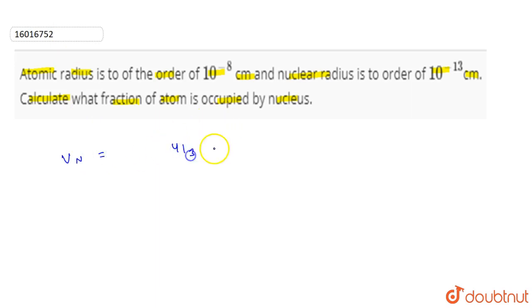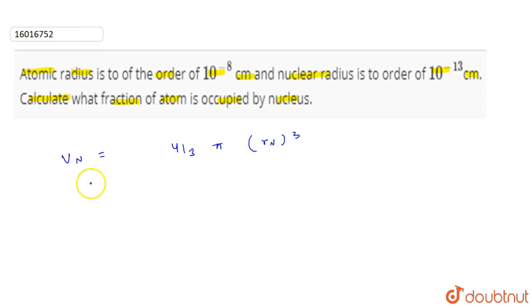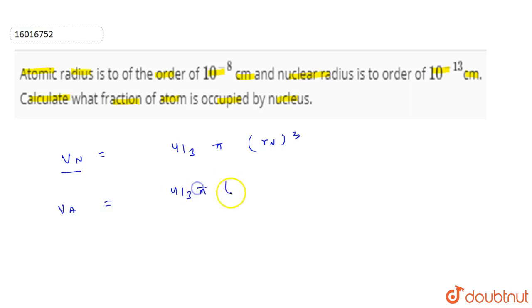The volume of the nucleus will be 4/3 π times the radius of the nucleus cubed. The fraction will be that volume divided by 4/3 π times the radius of the atom cubed.